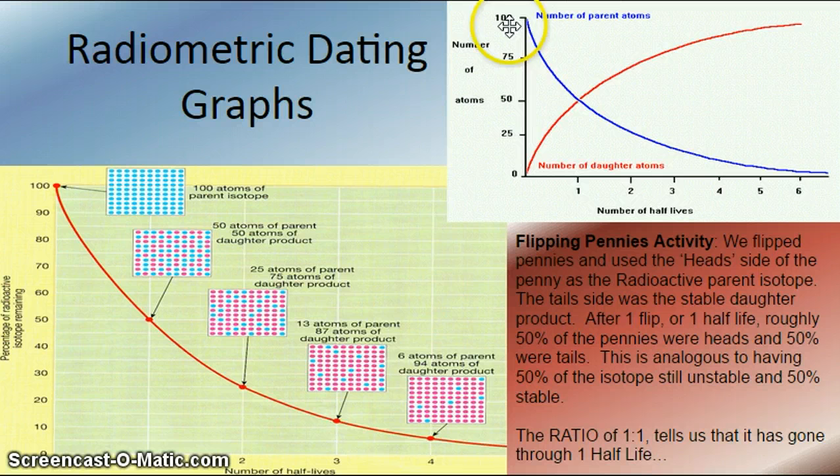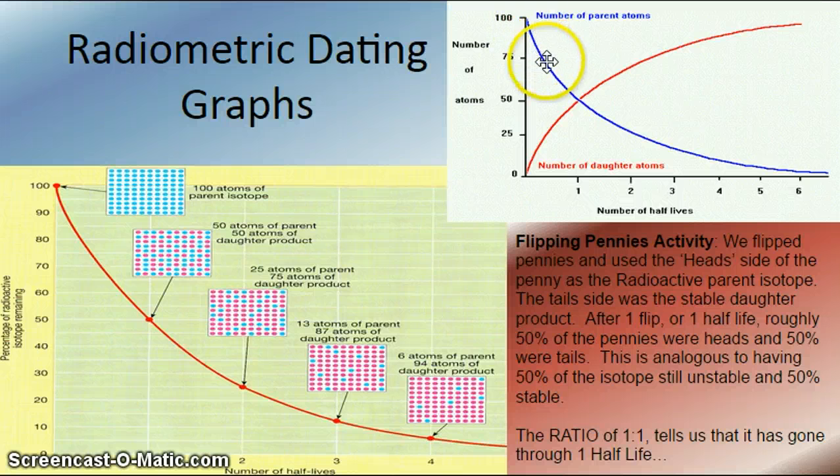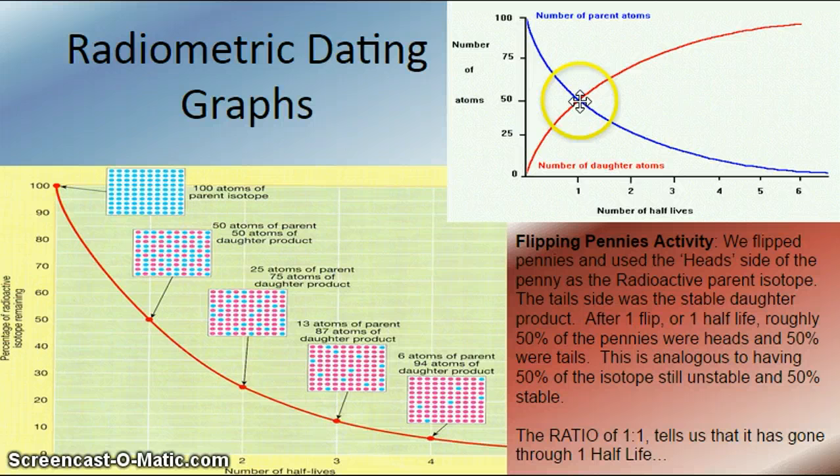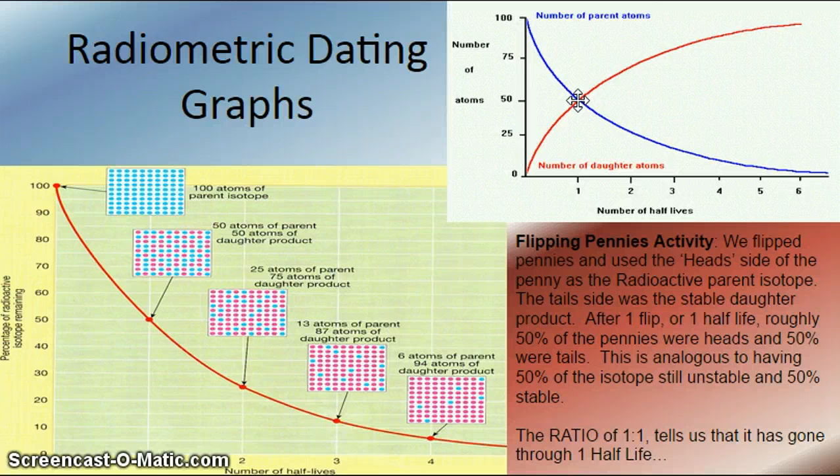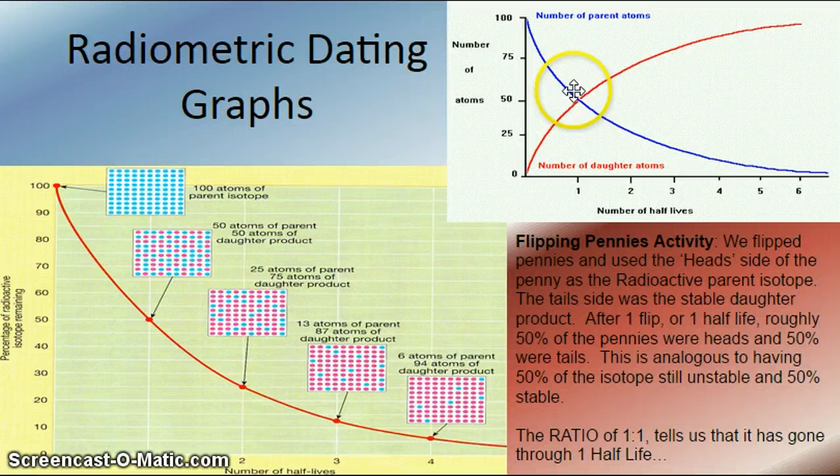So after one flip, I can apply this graph here, where if I start off with the 100 pennies and I flip them, and I do this some number of times, you'll find that as I lose 50% of my unstable parent, I gain 50% of my stable daughter. So I always have, at this point right here, at one half-life, I always have 100 total sample. As I lose parent, I gain daughter. So here I have 50 parent and 50 daughter.